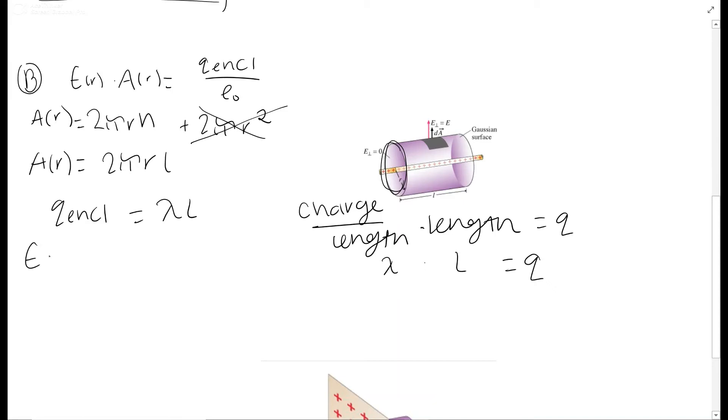So we have E times 2 pi r L equals lambda L over epsilon naught. The Ls are going to cancel out and we have E equals lambda over 2 pi r epsilon naught. And that is your answer for B.